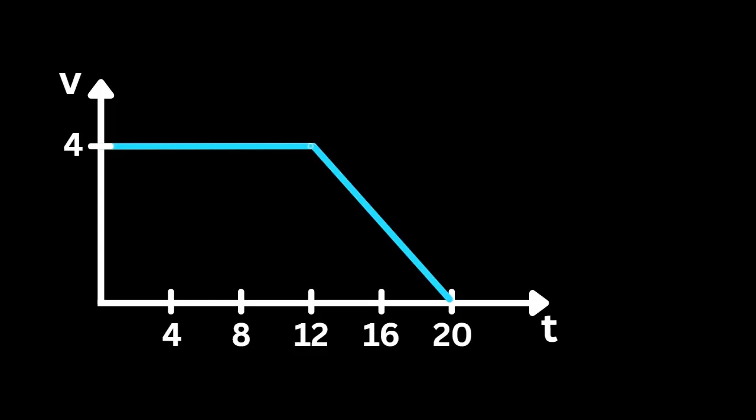Now we have an object that's moving at constant velocity for 12 seconds at 4 meters per second and then decreases to 0 meters per second once it reaches 20 seconds. So we're looking for the displacement again, and we're going to look at the area under the curve. We're going to break this into a rectangle and a triangle. So wherever possible, you want to break it into basic, simple geometric shapes that you can calculate the area of. So we'll start with the rectangle.